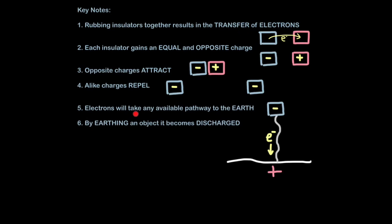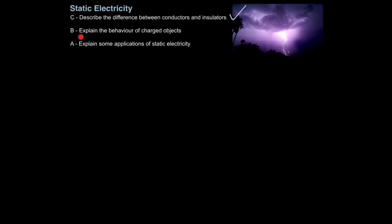Remember that opposite charges attract each other, whereas materials with the same charge will repel each other. Also remember that electrons will take any available pathway to the earth where there are few electrons. By earthing an object it becomes discharged. So when the electrons travel down to the earth, the object loses its negative charge and becomes discharged. And that's how you explain the behavior of charged objects.